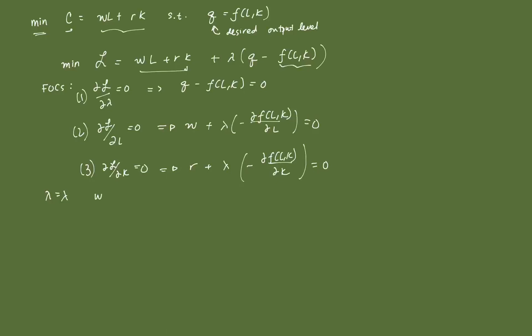For condition 2, we get W is equal to lambda times the partial derivative of F(L,K) with respect to L. We know that this partial derivative is just equal to MPL — the marginal product of labor. So, simplifying, we get lambda is equal to W over MPL.